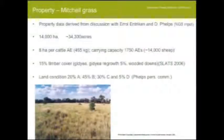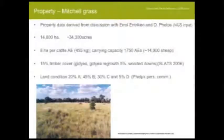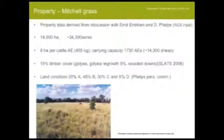The current capacity of this property is 1,750 adult equivalents. We assume it has 15% timber cover with Gidgee, with 5% being Gidgee regrowth and the rest Wooded Downs country. This is fairly close to the local region, as SLATS data shows about 14.5% timber cover in the Mitchellgrass fire region. Using information from David Phelps, the average land condition from their regional assessment is: 20% in A condition, 40% in B, 30% in C, and 5% in D condition. That's the background property we're using.